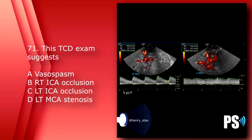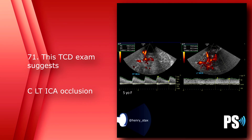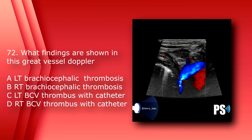Number 71: This TCD exam suggests: A) vasospasm, B) right internal carotid artery occlusion, C) left internal carotid artery occlusion, or D) left middle cerebral artery stenosis. The answer is C, left internal carotid artery occlusion. You have normal flow in the right middle cerebral artery and flattened peaks with reduced velocity in the left, suggesting left ICA occlusion with collateralization from the right.